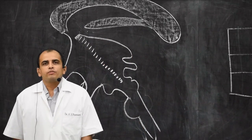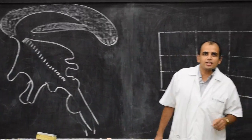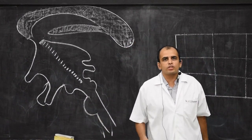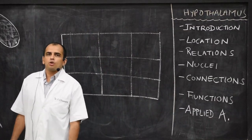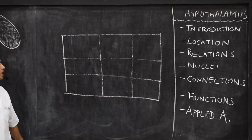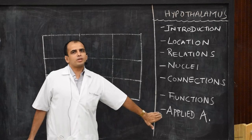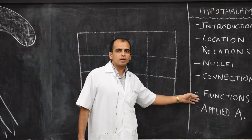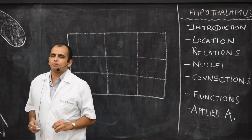Good morning students. Today we are going to learn about the hypothalamus. Basically it is more or less related to a physiological topic, but we are here going to understand the anatomy and the connections of the hypothalamus. Hypothalamus can be described under the headings of introduction, location, relations, nuclei, connections, functions, and applied anatomy. The functions and applied anatomy will not be discussed in detail as that has been covered in physiology. We will mainly consider the anatomical aspect.